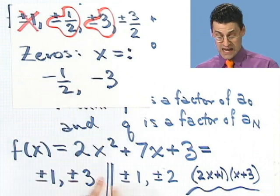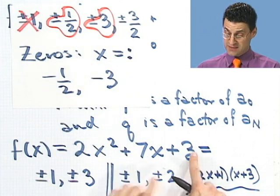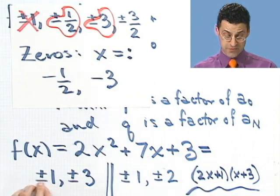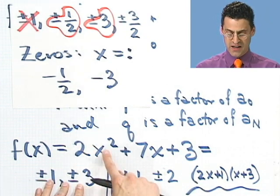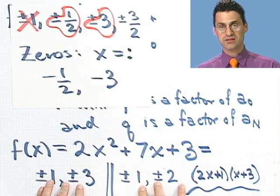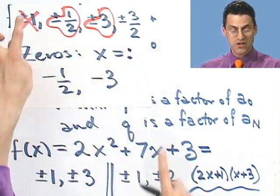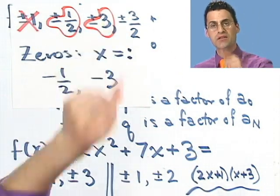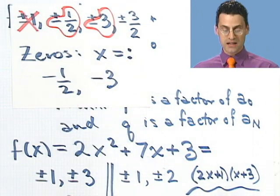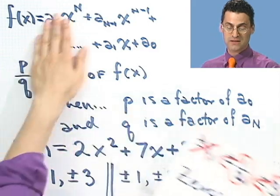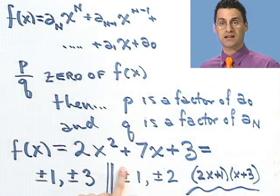But you can see how this works. I just take these guys here, the constant terms, all the possible factors. Those are the numerators. Take the coefficient on the highest term, write all the possible factors. Take all the quotients like that. Check each and every one. If any of them is going to be a rational zero, it's going to be on this list. You can find it, even if the polynomial is a very complicated one, not just a simple one like this. That's all there is to it. And that's called the rational zero theorem.